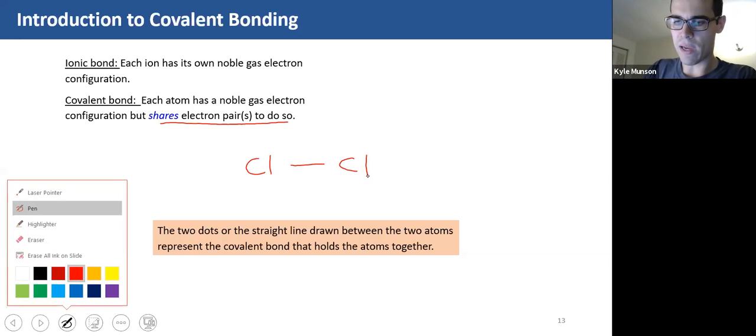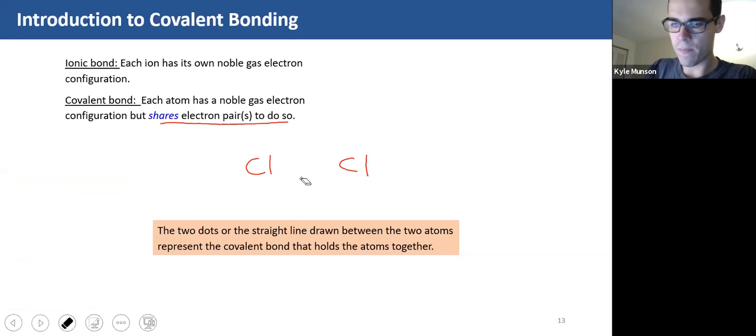I'm going to actually write that like this. So each chlorine atom, if you look at it, has seven valence electrons to bring to the table. So NS2 NP5. They each have seven valence electrons and there's 14 electrons. So in order for them to each have a noble gas configuration, to have that noble gas core, if you would, they're going to have to share.